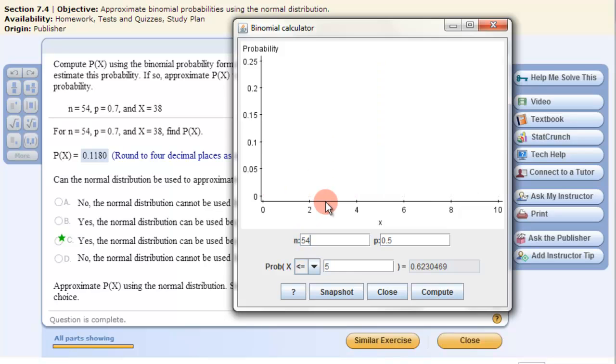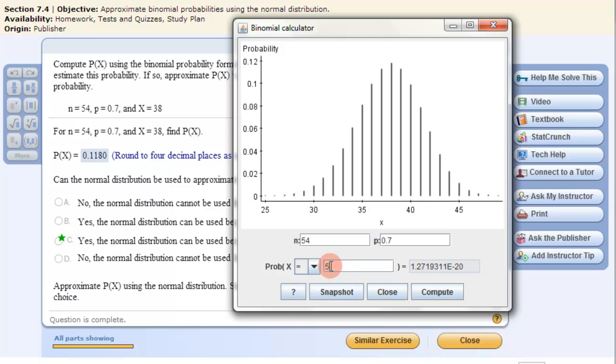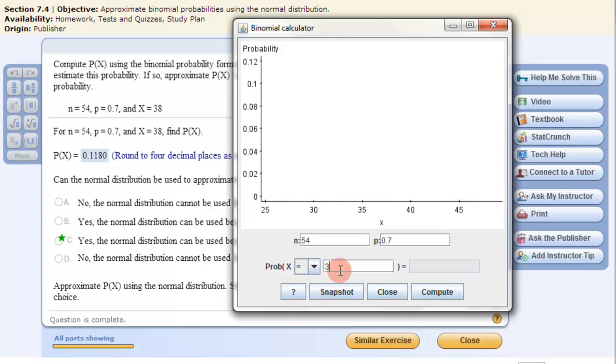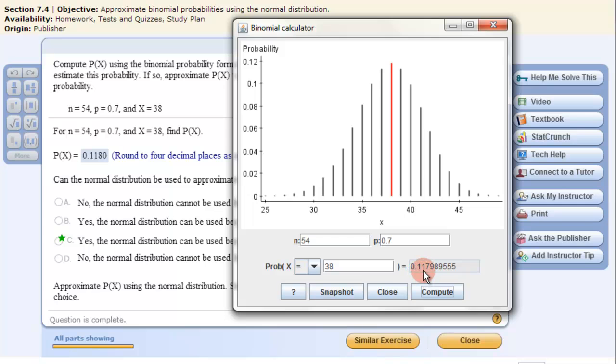The N is 54, the probability is 0.7, and then we want to change this to equal to and 38. Then hit Compute. And this will be the probability right here, 0.1179 or 0.1180, just like they have here.